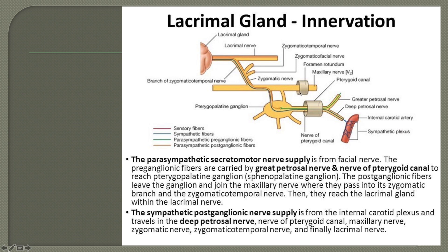That space is called the pterygopalatine fossa. This pterygopalatine fossa has several openings posteriorly; one of them is the foramen rotundum, which opens behind into the middle cranial fossa. Through that, the V2 division of the trigeminal — the maxillary nerve — enters the pterygopalatine fossa.